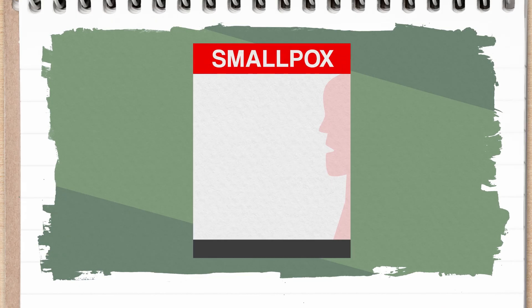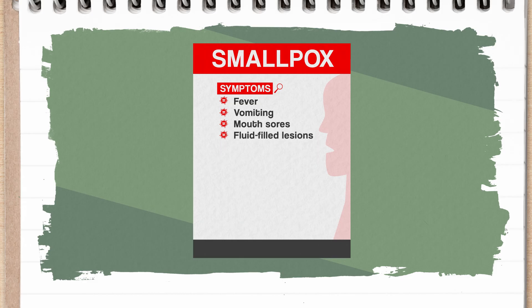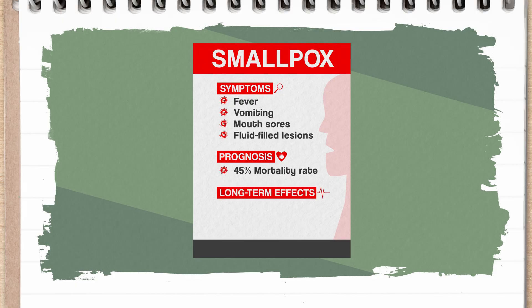And it was not a fun way to go. Symptoms included fever, vomiting, mouth sores, and fluid-filled lesions on the whole body. About 45% of smallpox victims died from the disease, and those who survived could be blind, infertile, and scarred for life.